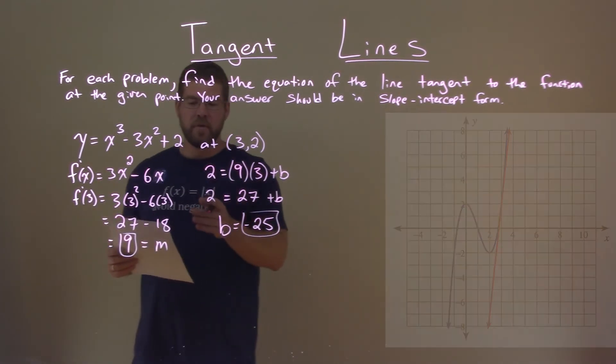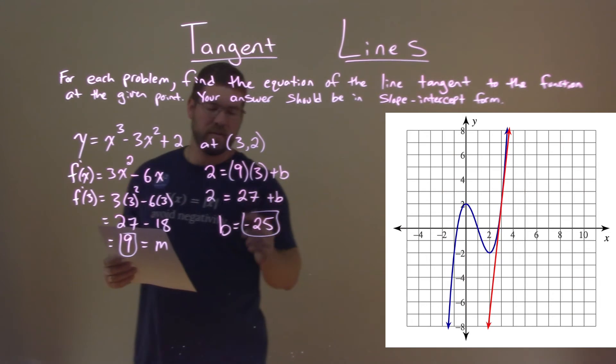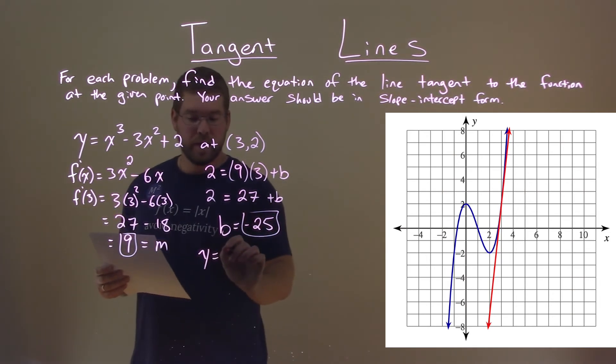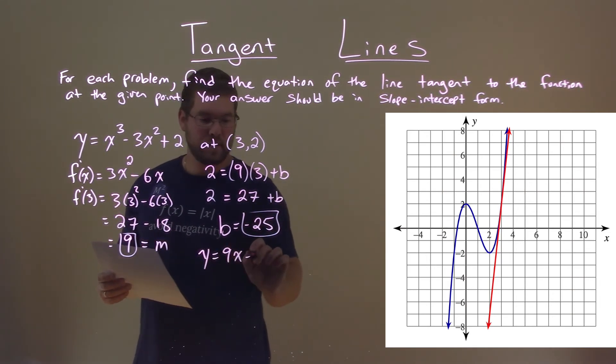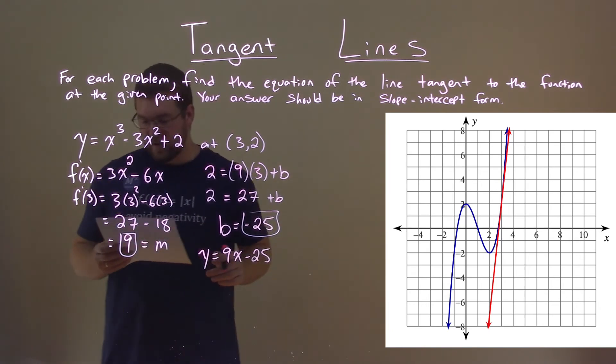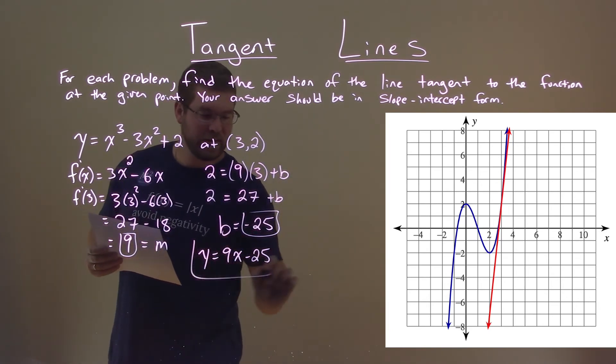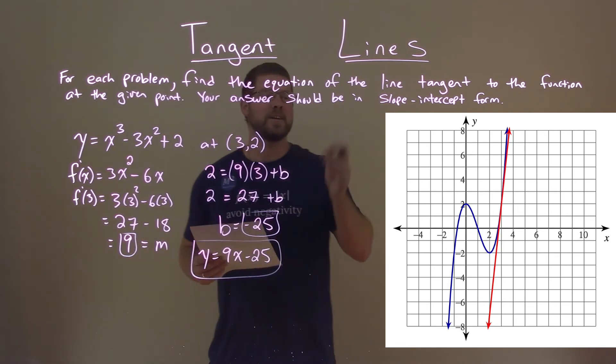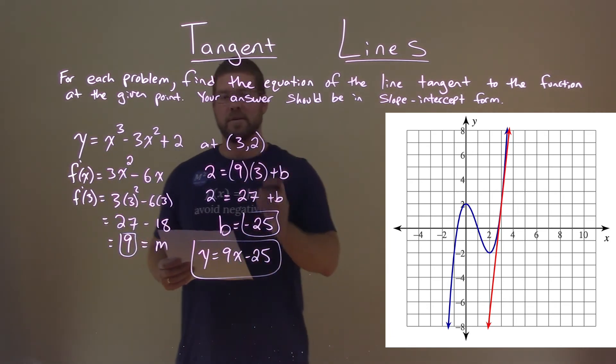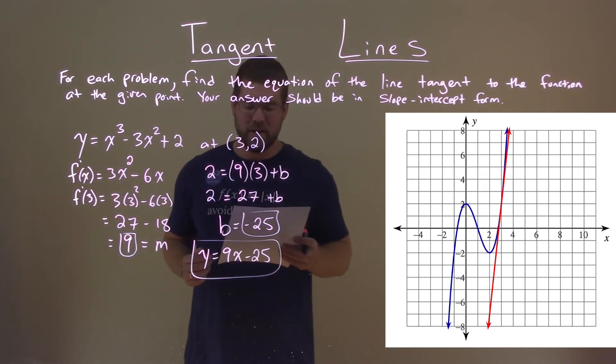We have our m value and our b value, so we can write the equation of the line. Y equals 9x minus 25, and that's the equation of our tangent line at 3 comma 2. That's our final answer.